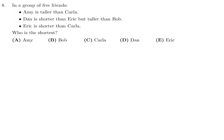Question 8: In a group of five friends, Amy is taller than Carla; Dan is shorter than Eric but taller than Bob; Eric is shorter than Carla. Who is the shortest? Ordering them: Amy > Carla > Eric > Dan > Bob. The shortest is Bob. Choice B for number 8.